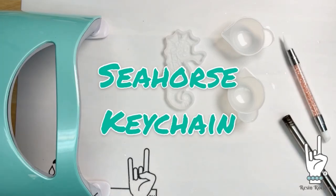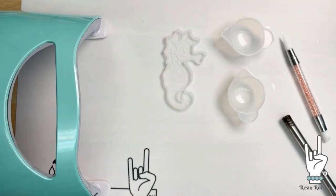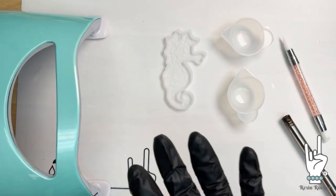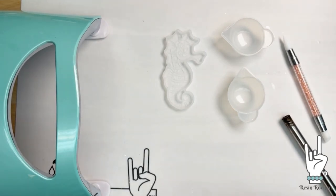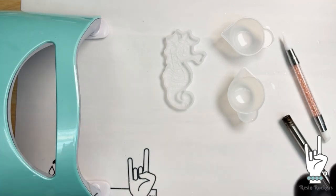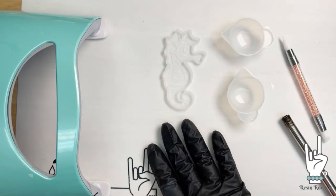Now we're going to make this adorable little seahorse keychain. This is one of my favorite molds. This is an unreleased mold. We'll have a couple different varieties in the shop once everyone receives their boxes, but this is so cute and so easy to do with UV resin. I can't wait to show you what it looks like and how it turns out.